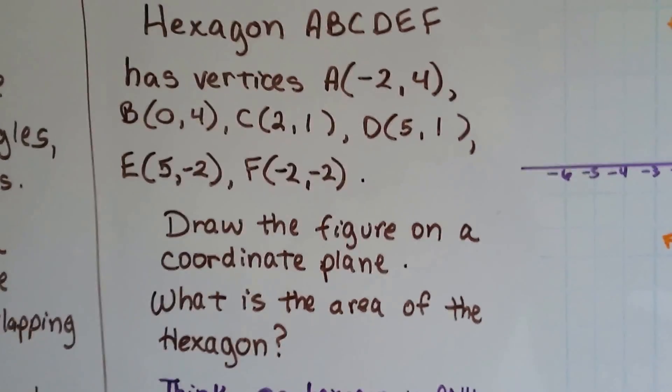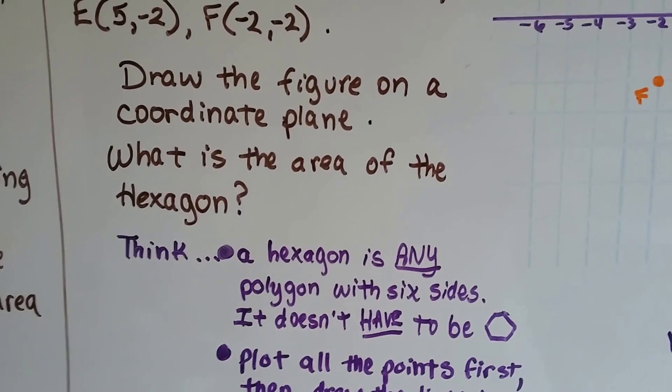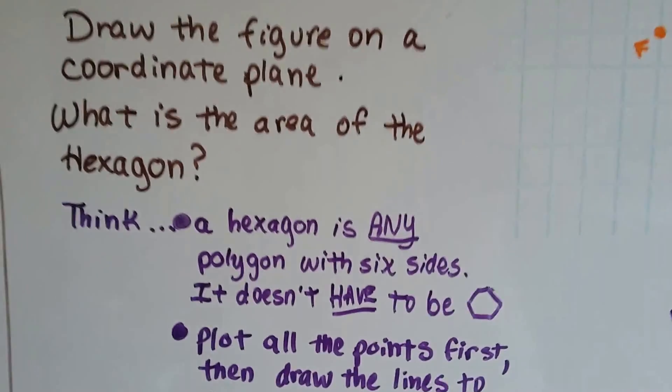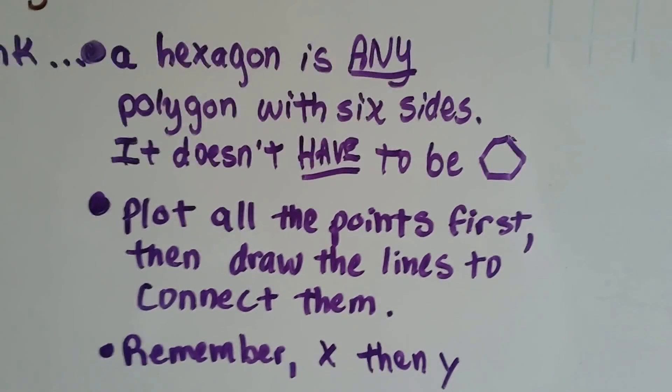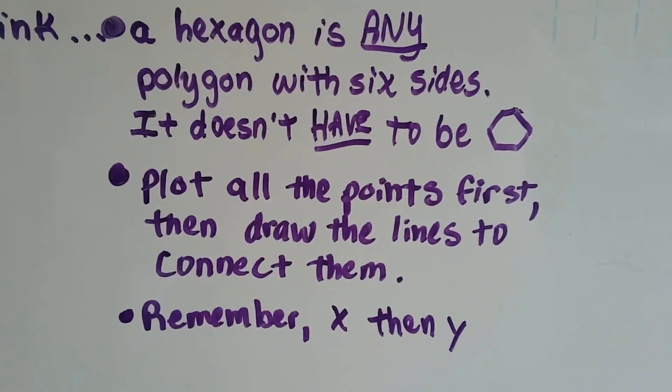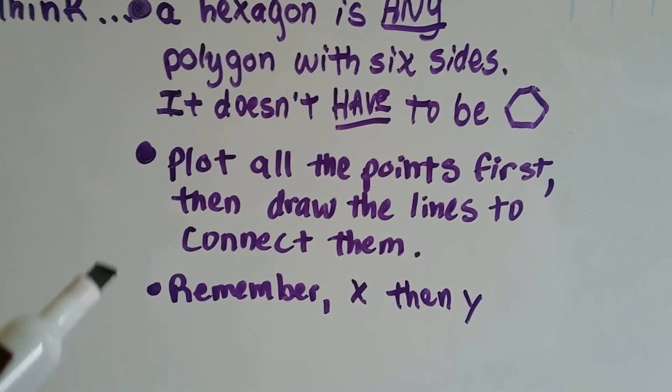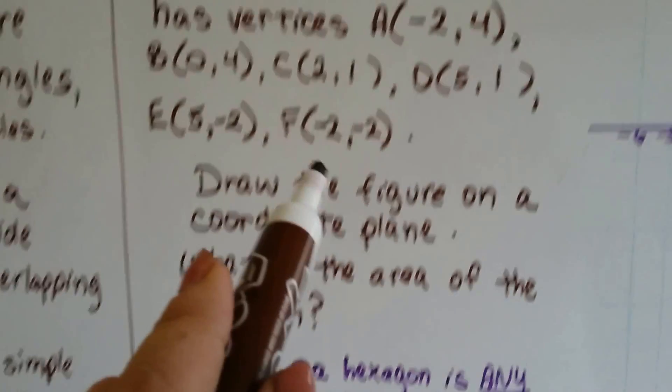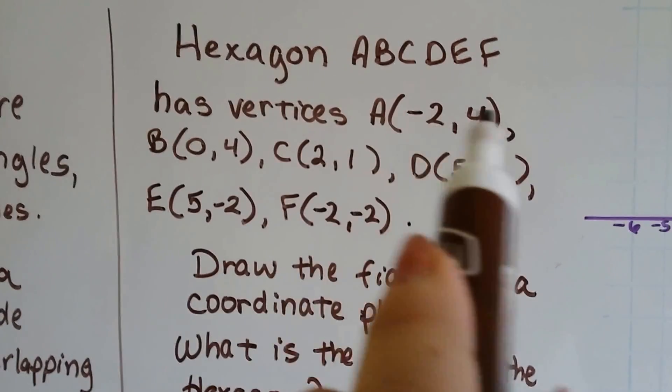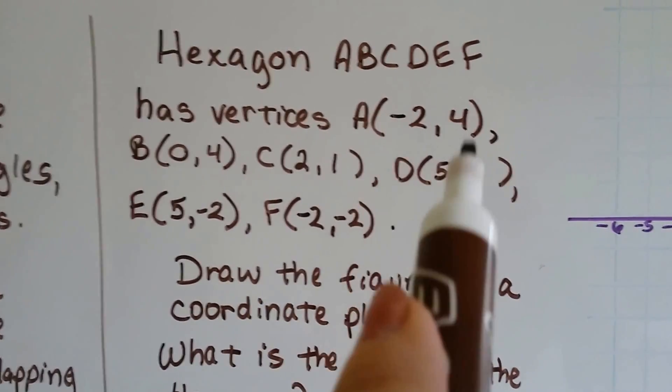So, we know it's going to be a hexagon. It's going to have six sides. A hexagon is any polygon with six sides. It doesn't have to be shaped like that. It just has six sides. So, we plot all the points first, then we draw the lines to connect them, and remember, it goes x, then y. So, our numbers for our coordinate pairs here, these are coordinate pairs, (-2, 4), that's x, and that's y.